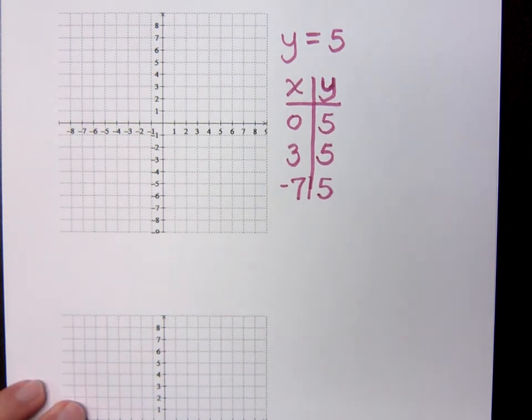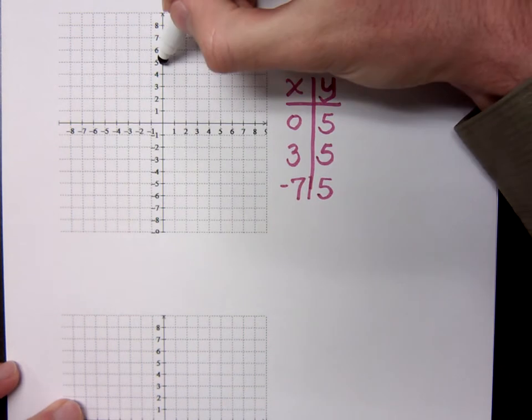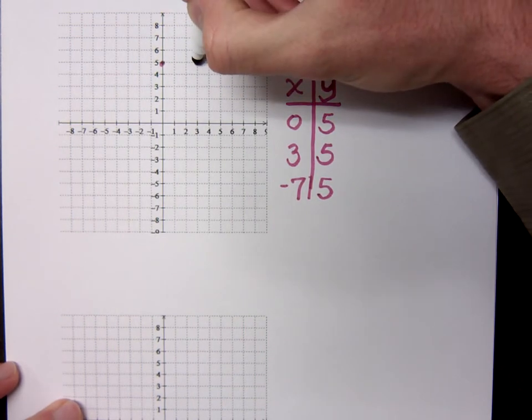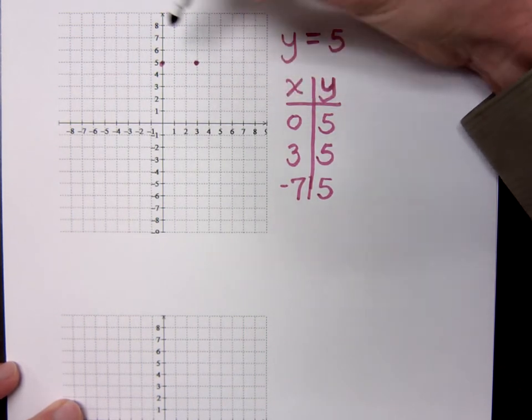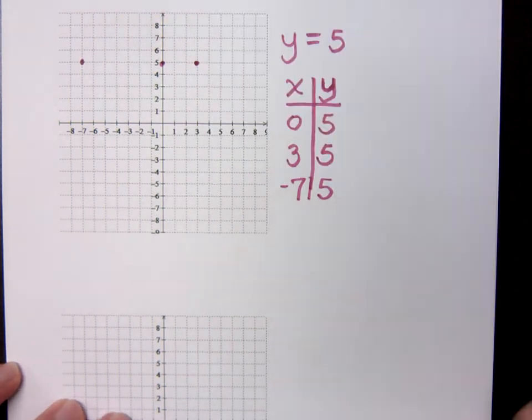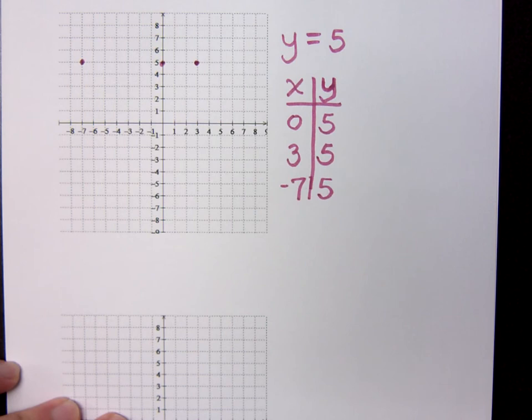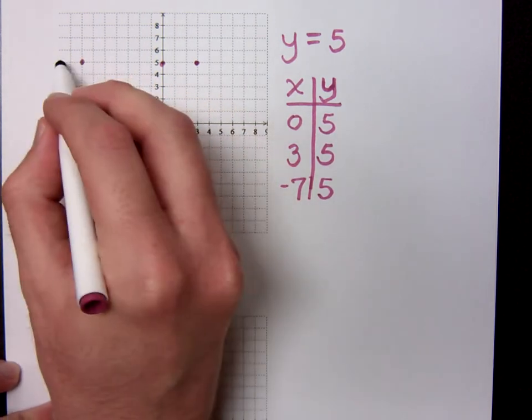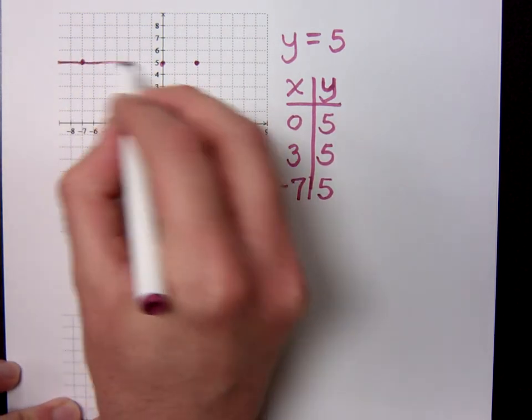Now, when you plot these points, making sure you do plot correctly, you've got 0, 5, you've got 3, 5, and negative 7, 5 is somewhere over here. So, you see, you do have a line. It is straight. Of course, it's straight, because all lines are straight. I think what you meant to say is, this is a horizontal line.